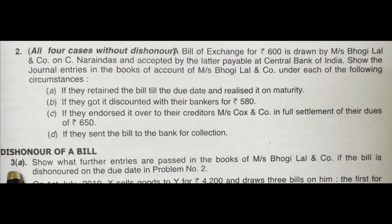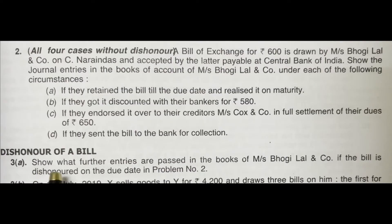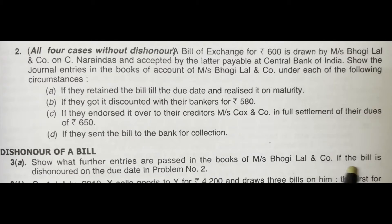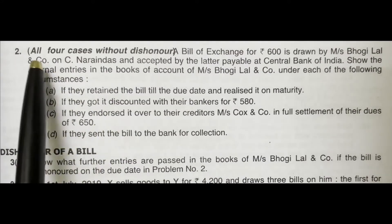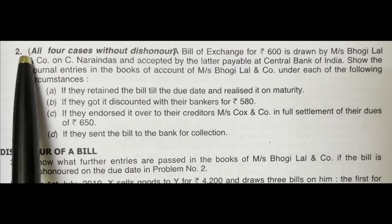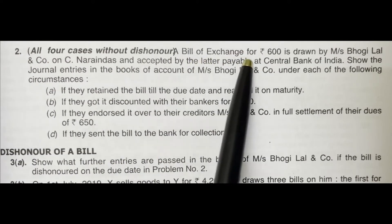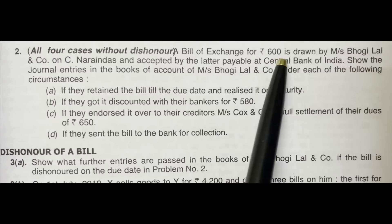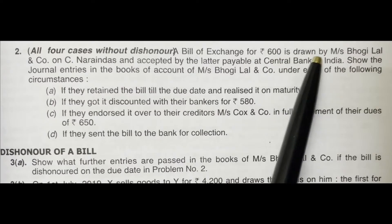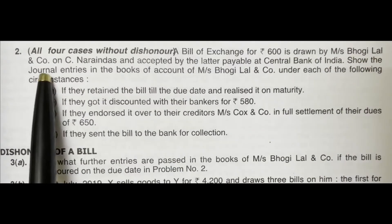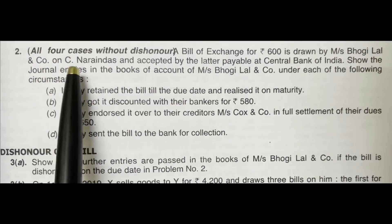Let us see the question first. Third problem A: show what journal entries are passed in the books of Merses Bhoge Lal and Company if the bill is dishonored on the due date in problem number 2. Let us see problem number 2 again. A bill of exchange for 600 rupees is drawn by Merses Bhoge Lal and Company on C. Narayindas.